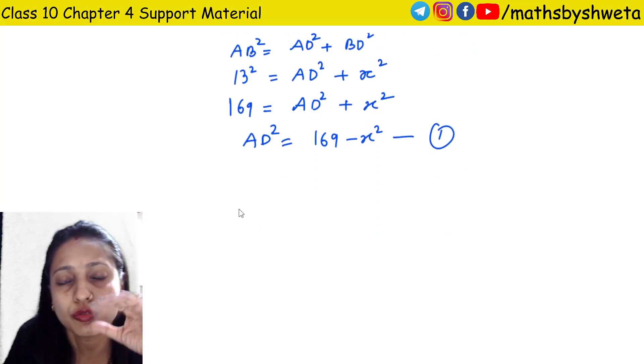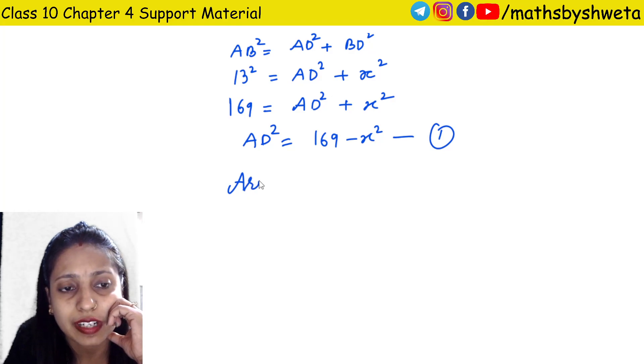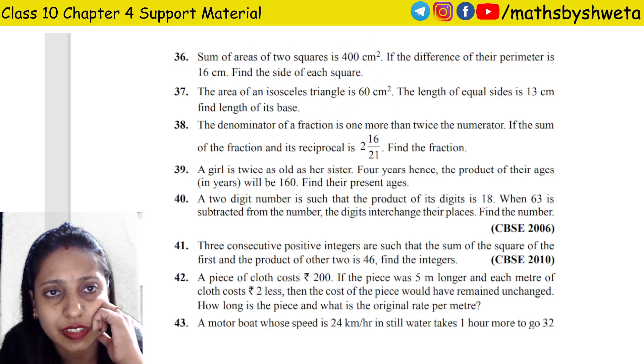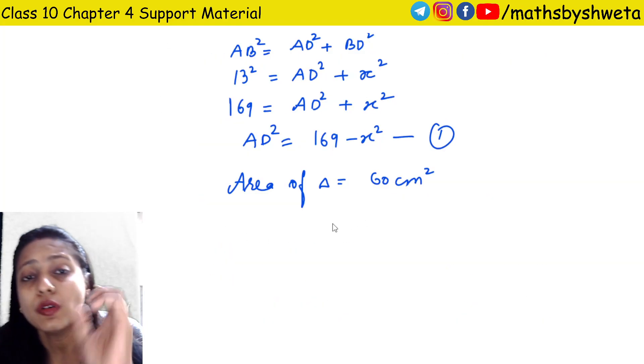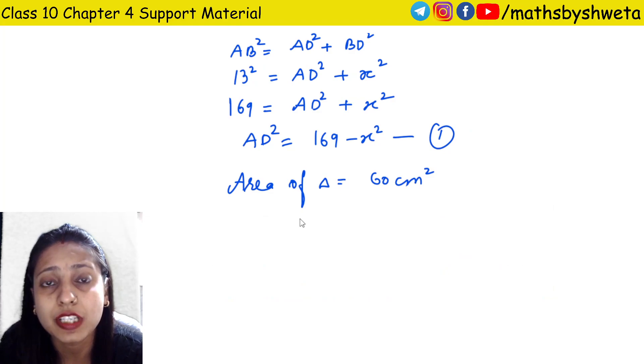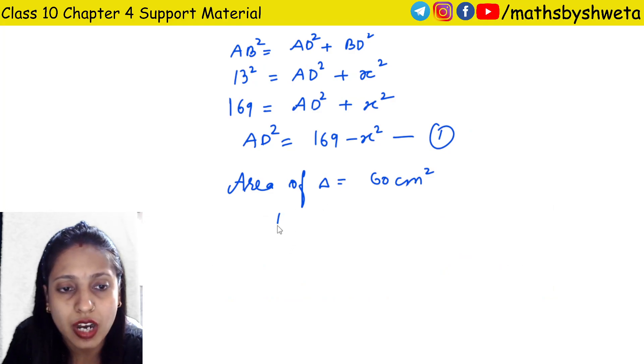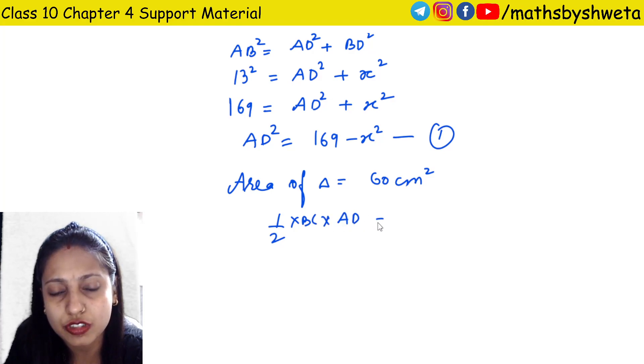Area of triangle was given as 60 cm square. Area of triangle is half base into height, so half BC into AD equals 60. BC is 2x, so half into 2x into AD equals 60.